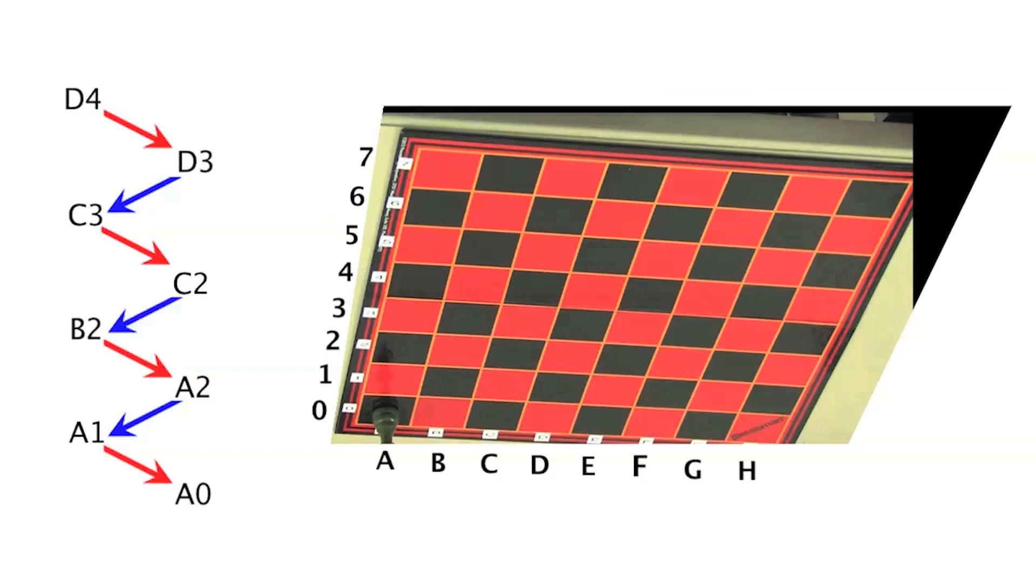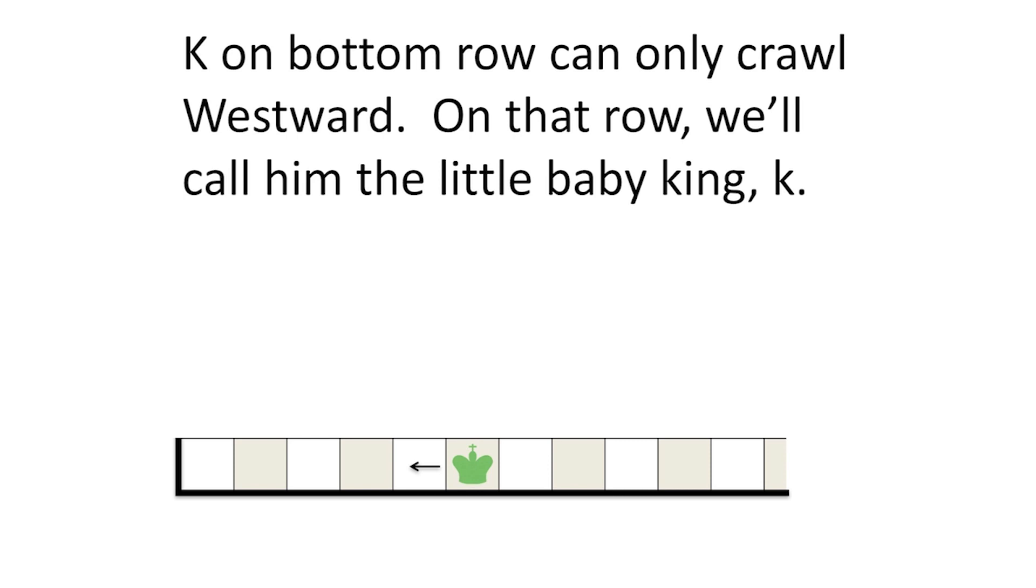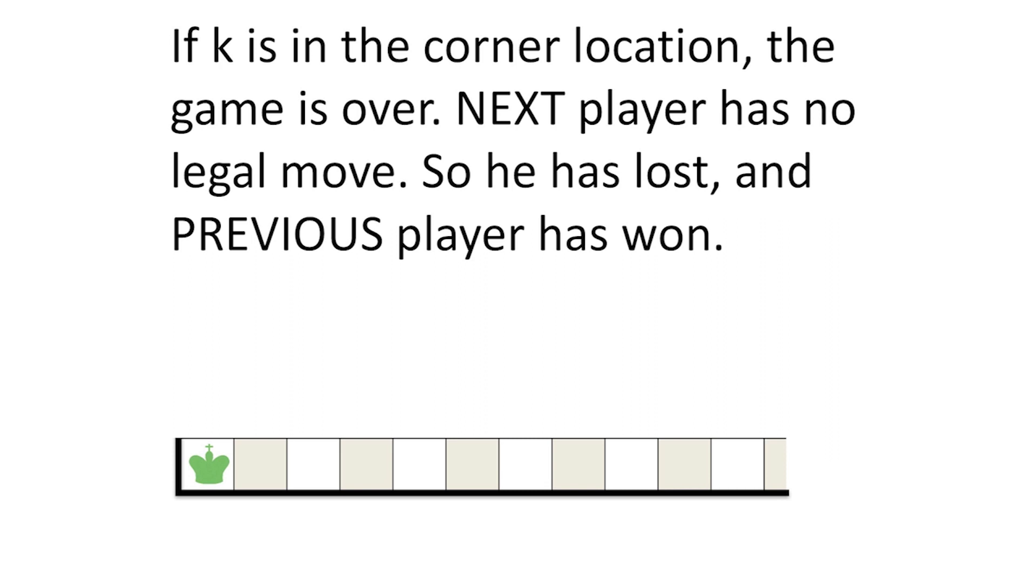Let's now do a general analysis of the game of the impartial chess king. This game is simpler if the king is on the bottom row. He can then only crawl westward, so we'll call him the little baby king, denoted by the lowercase k. If he's already in the corner location, the game is over. The next player has no legal move, so the previous player has won.